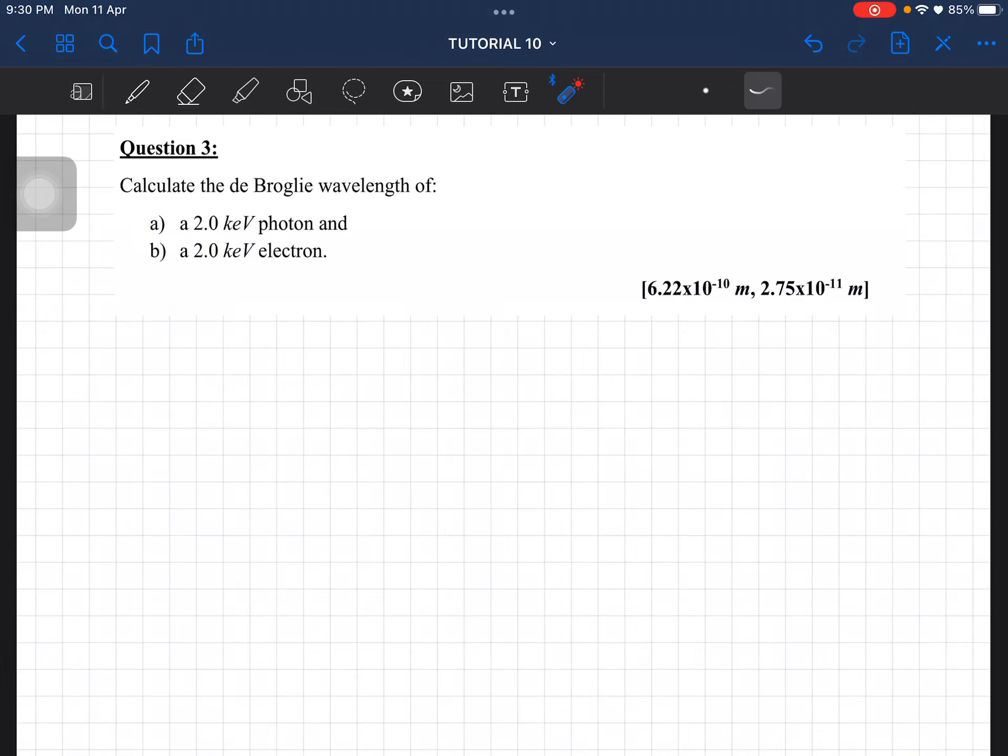Question number 3. Calculate the de Broglie wavelength for a 2 keV photon and a 2 keV electron.